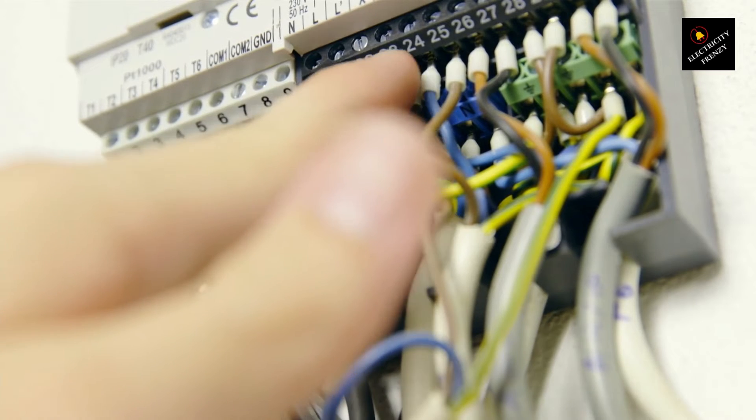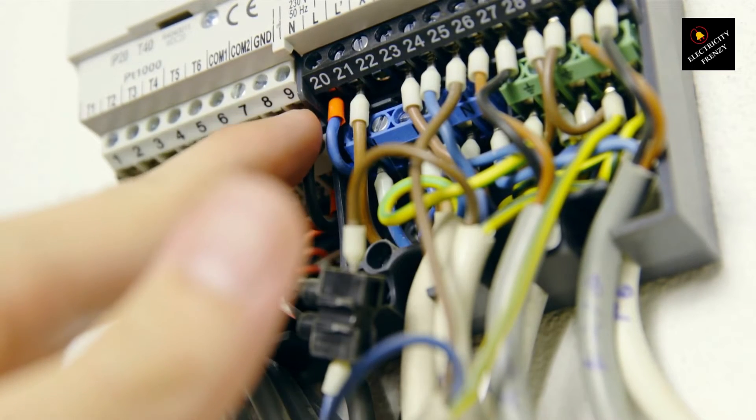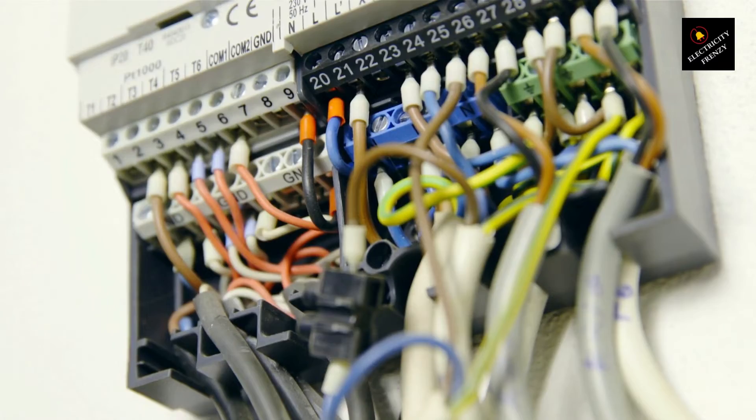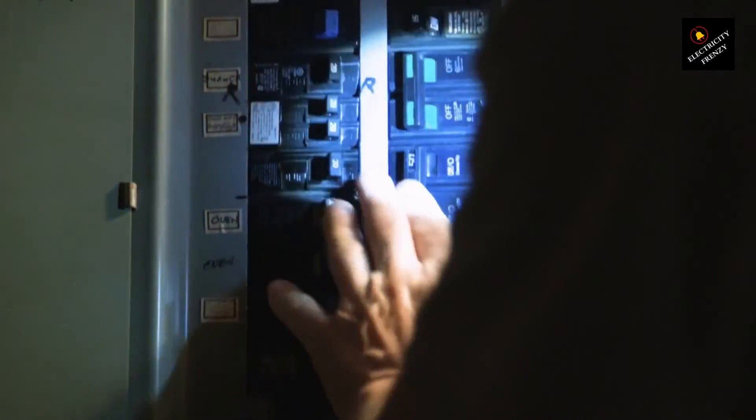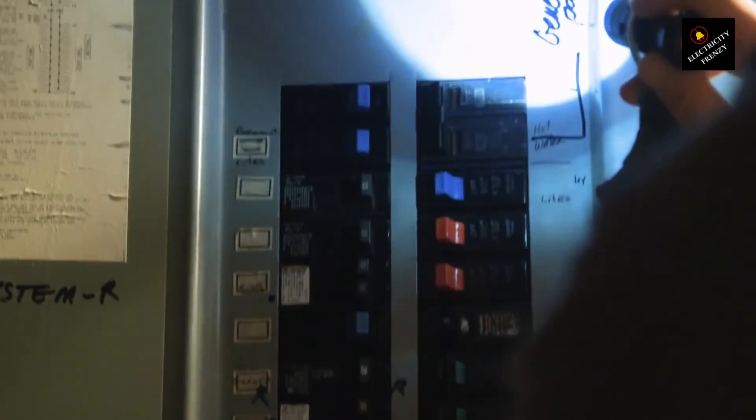As the appliance draws more current than the circuit can handle, the circuit breaker trips to prevent overheating and potential fire hazards. It's advisable to consult an appliance technician to assess and repair the faulty components to restore proper dryer functionality.